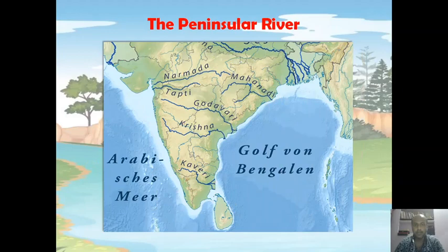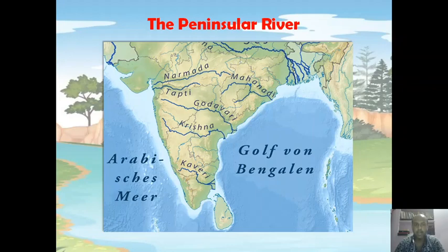The peninsular rivers. We can broadly classify the peninsular rivers into two categories: rivers flowing into the Bay of Bengal, known as east-flowing rivers — for example Mahanadi, Godavari, Krishna, and Kaveri — and on the other side, rivers flowing into the Arabian Sea, known as west-flowing rivers, for example Narmada and Tapi. Only the east-flowing rivers follow the general slope of the landform from west to east.